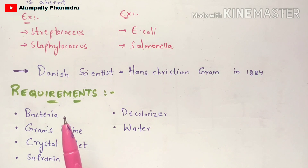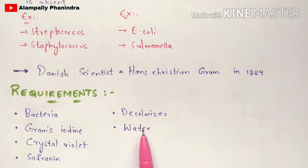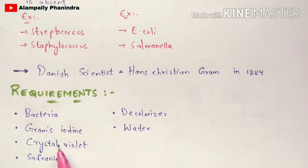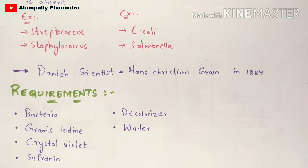Now let us discuss the procedure of gram staining. The main requirements are: a colony of bacteria, gram's iodine, crystal violet, safranin, a decolorizer, and water. These are the chemicals and materials required for the gram staining procedure.